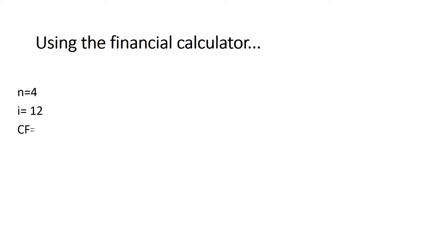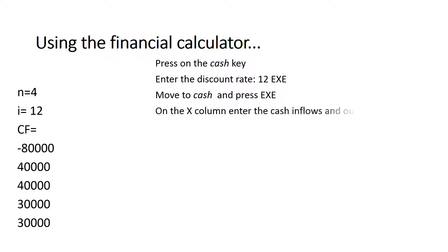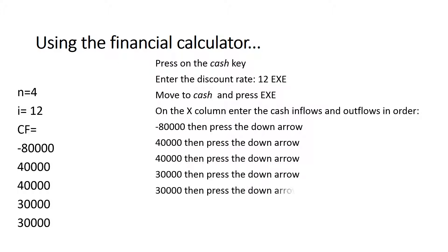Now let's solve the same problem using the financial calculator. We have: number of years = 4, interest rate = 12%, and cash flows of -$80,000, $40,000, $40,000, $30,000, and $30,000. Start by pressing the cash button, enter the discount rate of 12 and execute. Go to cash, enter, and execute. You will find two columns — X and frequency. Focus on X and enter the cash flows in order: -80,000, then 40,000, 40,000, 30,000, and 30,000, pressing the arrow after each entry.